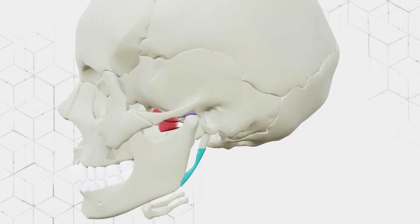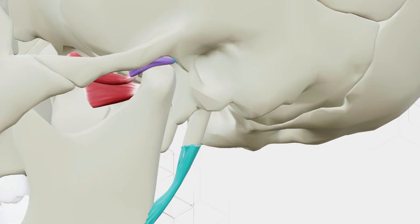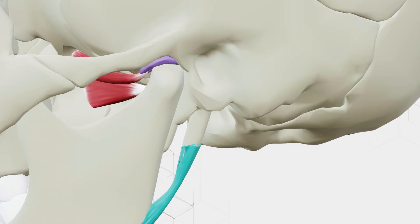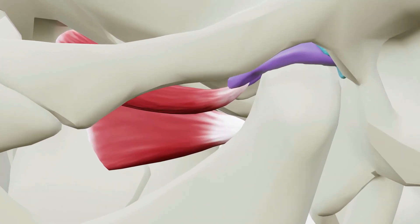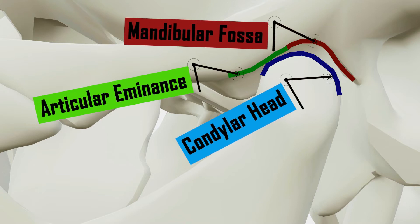The Temporomandibular Joint is formed by the articulation of the mandible and the temporal bone of the cranium. It is located anteriorly to the tragus of the ear on the lateral aspect of the face. The TMJ consists of articulations between three surfaces: the mandibular fossa and articular tubercle from the squamous part of the temporal bone, and the head of the mandibular condyle.